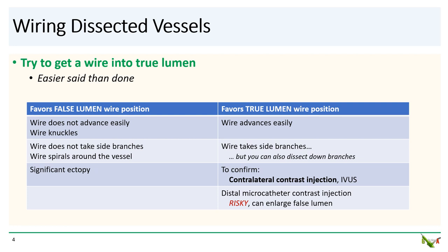If your wire knuckles — in other words, if it curls up — then you're in the false lumen. If your wire does not take any of the side branches, then you are in the false lumen. If your wire appears to be spiraling around the outside of the vessel, then that also means you're in the false lumen. If you get significant ectopy, then your wire might have actually exited the vessel architecture — pull it back.